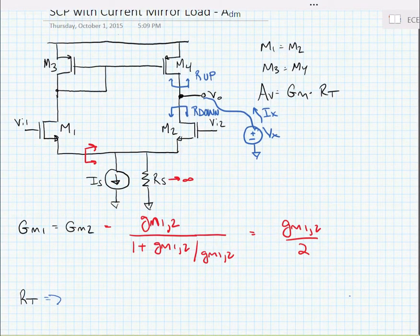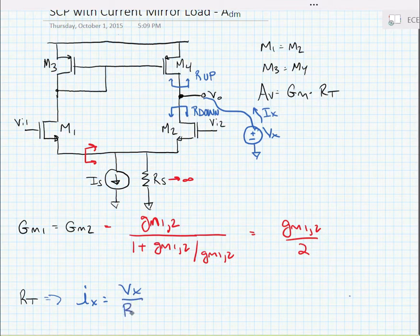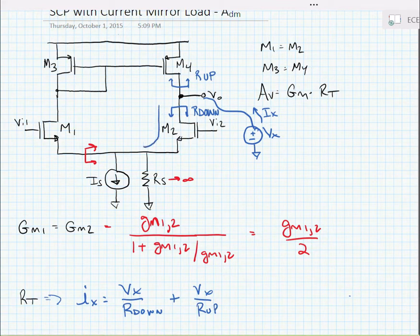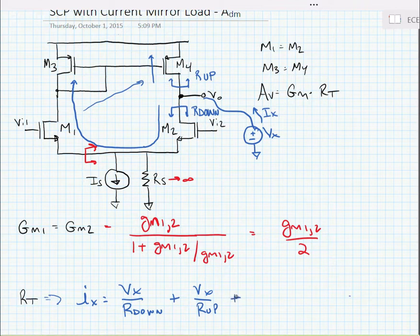So for RT, let's write a KCL expression at the output node. We can say that Ix is equal to Vx divided by R looking down plus Vx divided by R looking up. What we need to know here is that if we create a current due to Vx and R down, the current isn't going to want to flow into the high impedance current source - it's going to want to flow into the source of M1, which is low impedance, and ultimately into this current mirror at the diode-connected M3. Now if it flows into the diode-connected M3, it's going to get mirrored over into M4. So these currents are linked together. Ultimately what this means is that we get a second Vx over R down term.